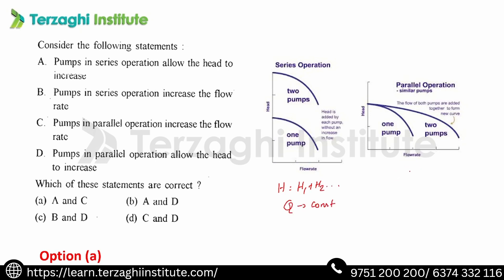Pumps in parallel: head is constant and discharge flow rate increases. So, pumps in series allow head to increase (option A is correct), and pumps in parallel increase the flow rate (option C is correct). Therefore, A and C are the answers.